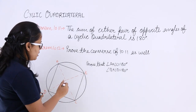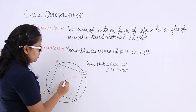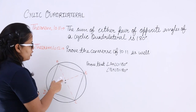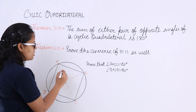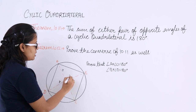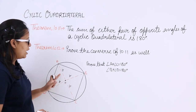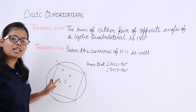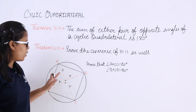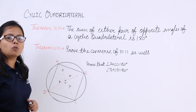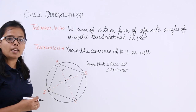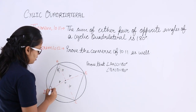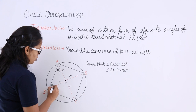How will you proceed with this problem? This is the center of the circle. From the center to any point on the circle, the distances are equal, so two sides of each triangle formed are the same, which makes them isosceles triangles. The angles opposite to the equal sides of an isosceles triangle are equal. So let's suppose this angle is theta 1, and this is also theta 1.